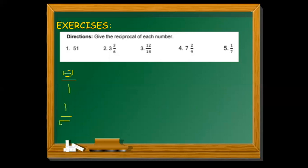This one, 3 and 3/6, we need to change this first to a mixed number. Let's multiply 6 times 3 equals 18, plus the numerator 3 equals 21. Then 18 plus 3 we have 24.